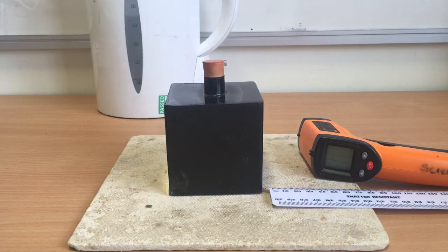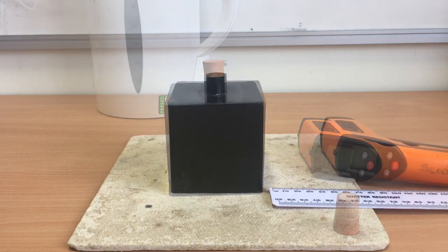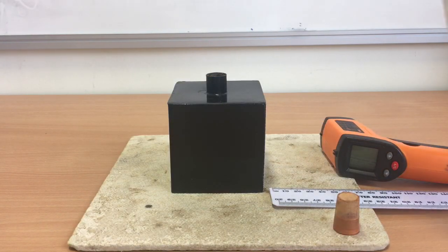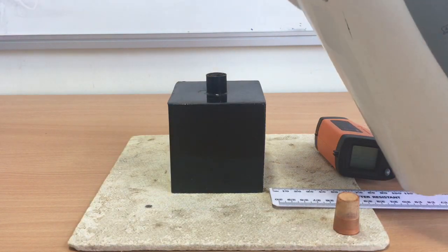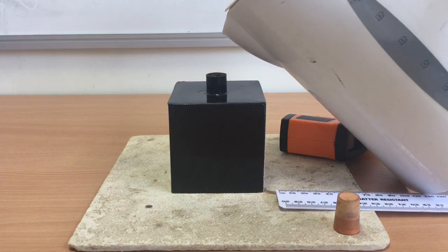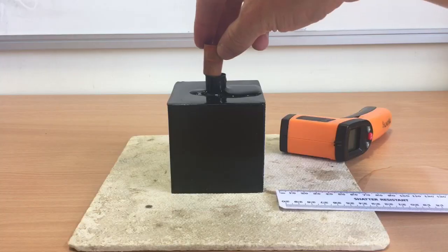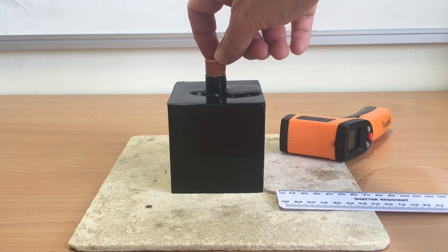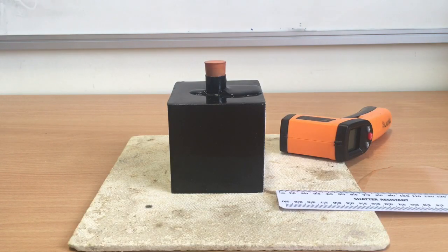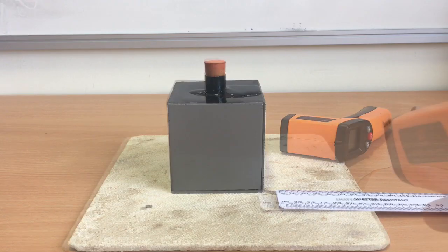So the first thing we're going to do is boil the kettle. Once the kettle's boiled, we're going to pour the boiling water into the Leslie Cube, and we're going to do this really carefully. And once we've filled the Leslie Cube with the hot water, we're going to put the bung in the top to try and limit the amount of energy lost through convection.